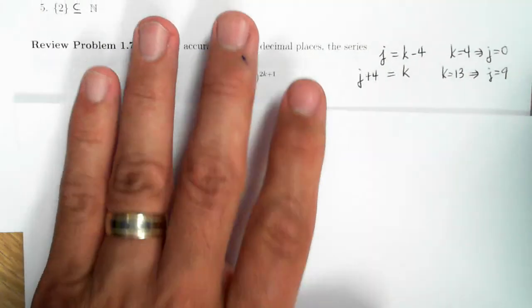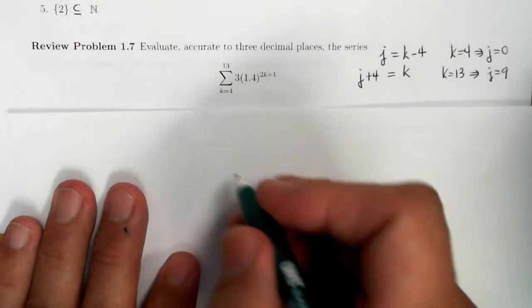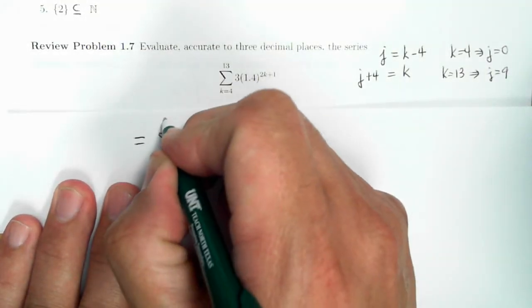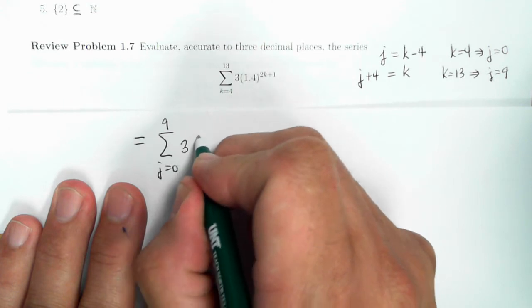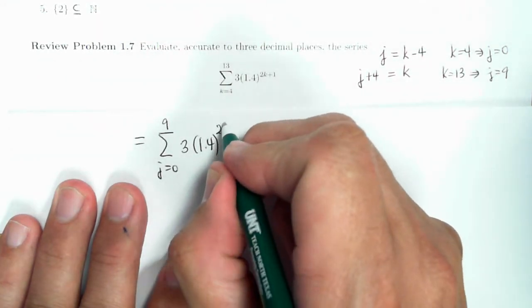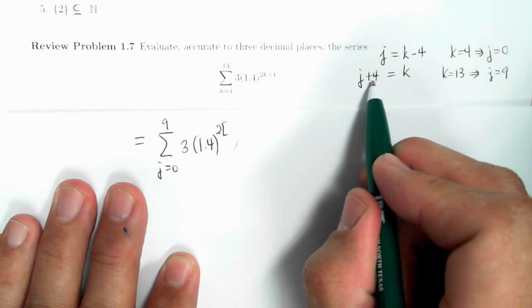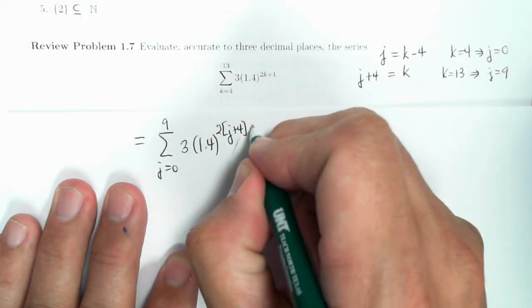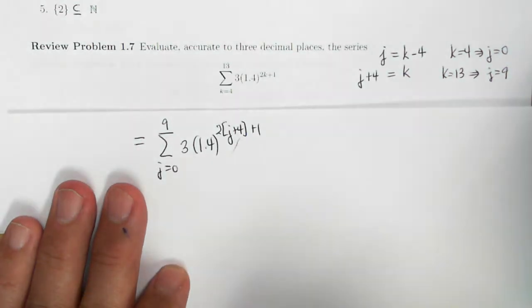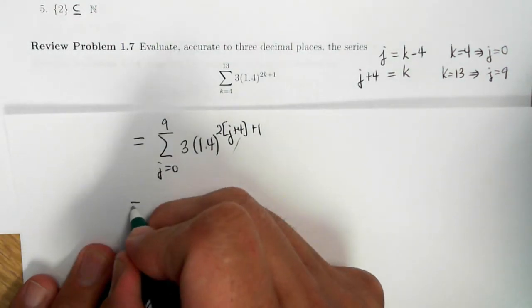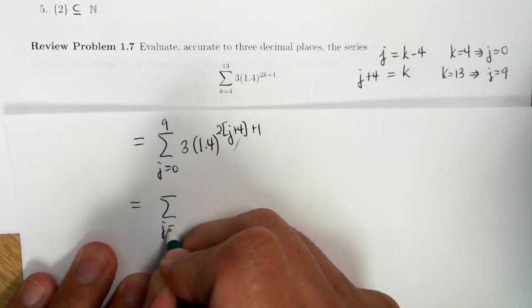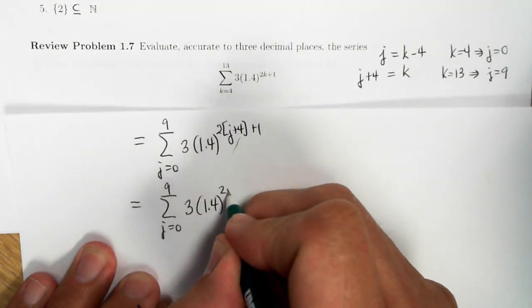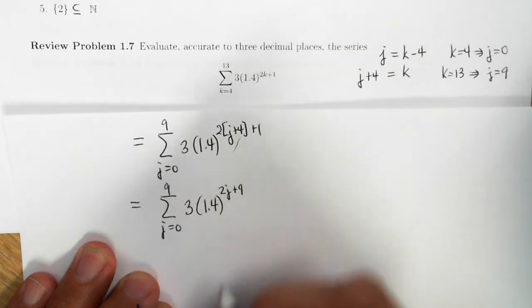And so by applying this change of variable, we get that this is equal to summation j equals 0 to 9 of 3, 1.4, 2 times, now instead of k, I've got to replace it. So j plus 4, plus 1. And so this simplifies as summation j equals 0 to 9 of 3 times 1.4 to the 2j plus 9.